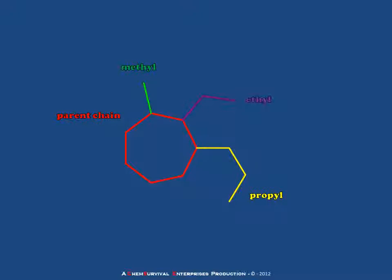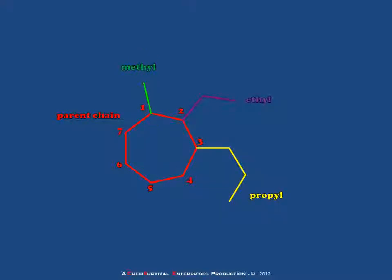So even though the ethyl is alphabetically first, we can't use it as the single starting position because that would generate a very large set of numbers. Instead, we start at one end and move around — going 1 at the methyl, 2 at the ethyl, and 3 at the propyl. Because of the alphabetical rules, we use the methyl numbering system, giving us a cycloheptane molecule with a methyl in the 1 position, an ethyl in the 2 position, and a propyl in the 3 position. Although we numbered these positions serially, we name the substituents alphabetically: 2-ethyl-1-methyl-3-propylcycloheptane.